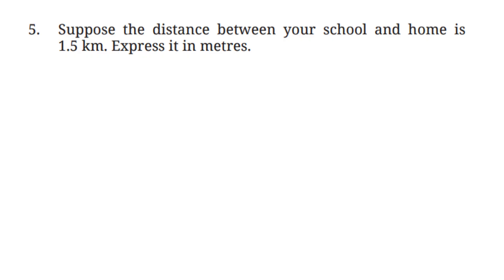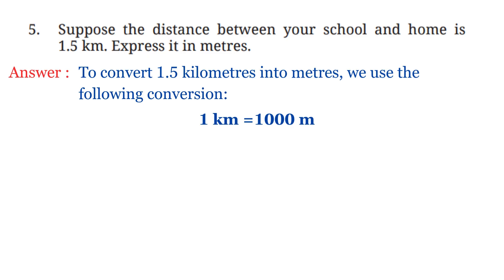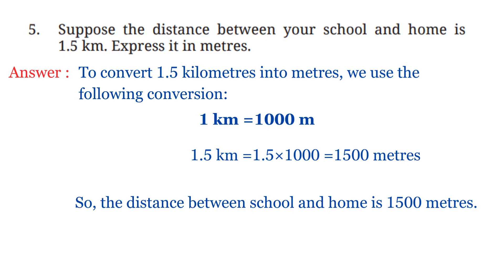Question No. 5: Suppose the distance between your school and home is 1.5 kilometers. Express it in meters. So to convert 1.5 kilometers into meters, we use the following conversion. 1 kilometer equals 1000 meters. So 1.5 kilometers will be equal to 1.5 times 1000, which equals 1500 meters. So the distance between school and home is 1500 meters.